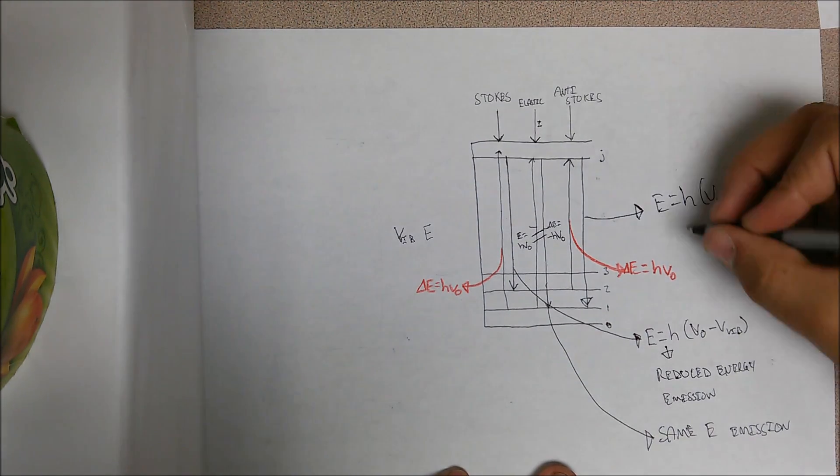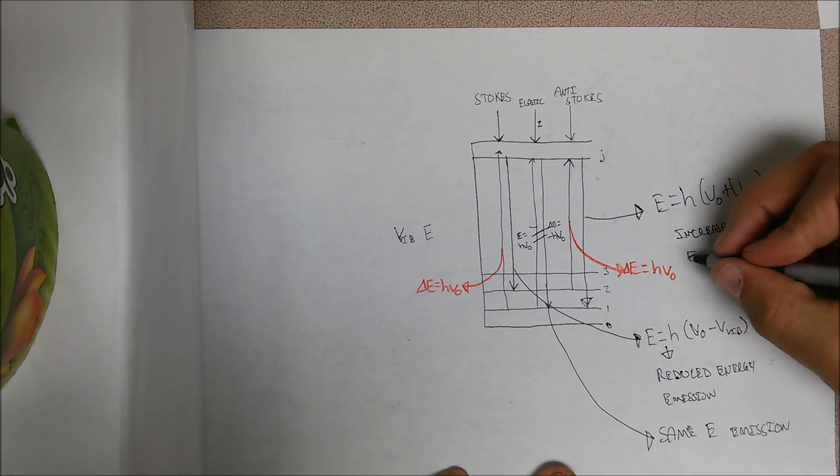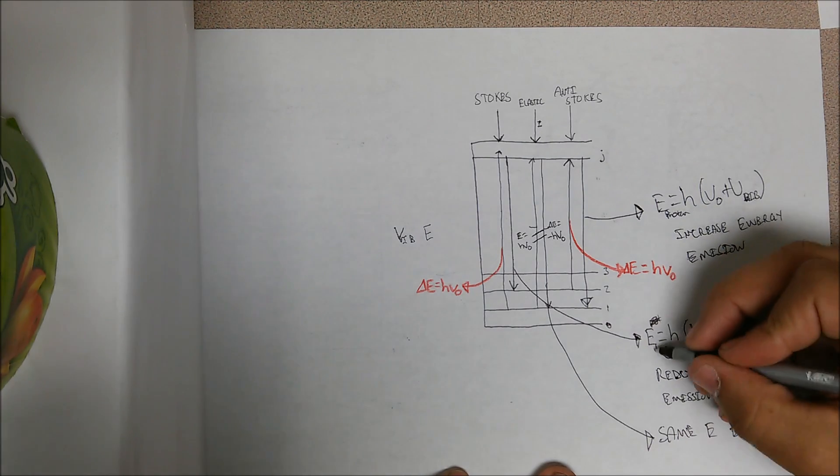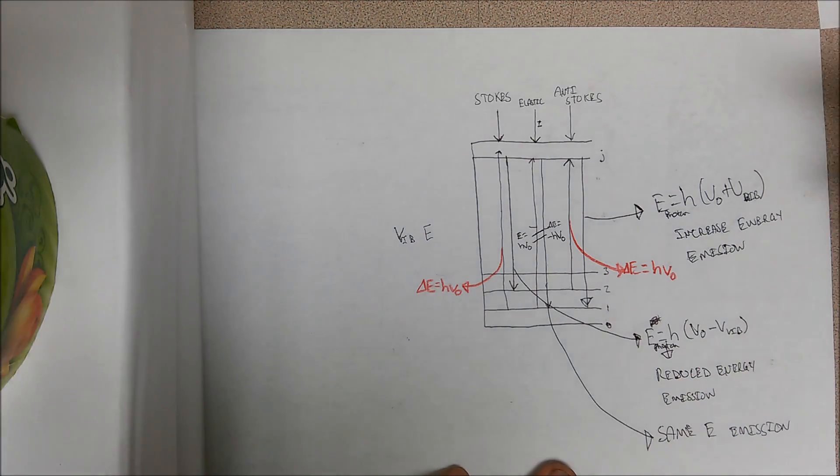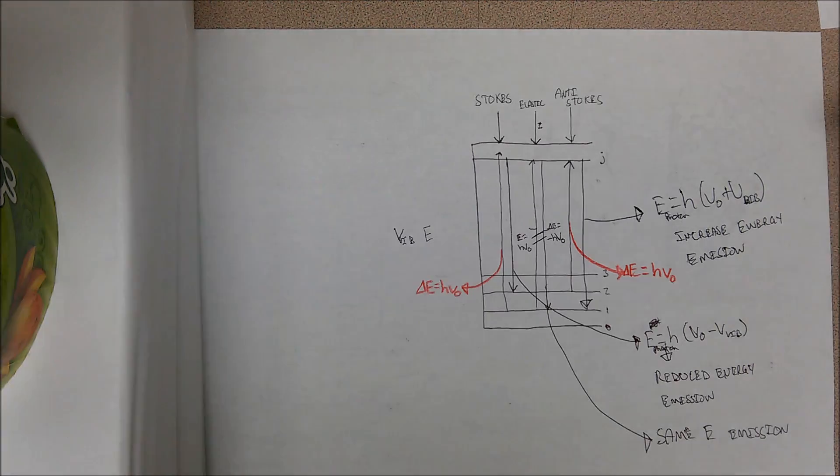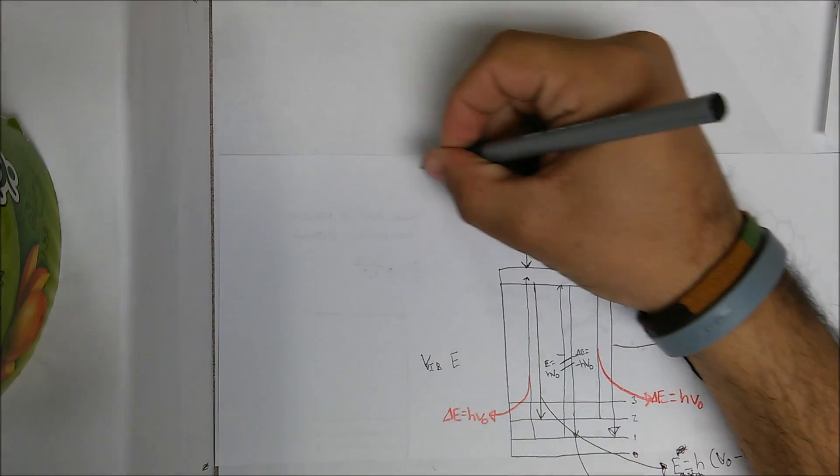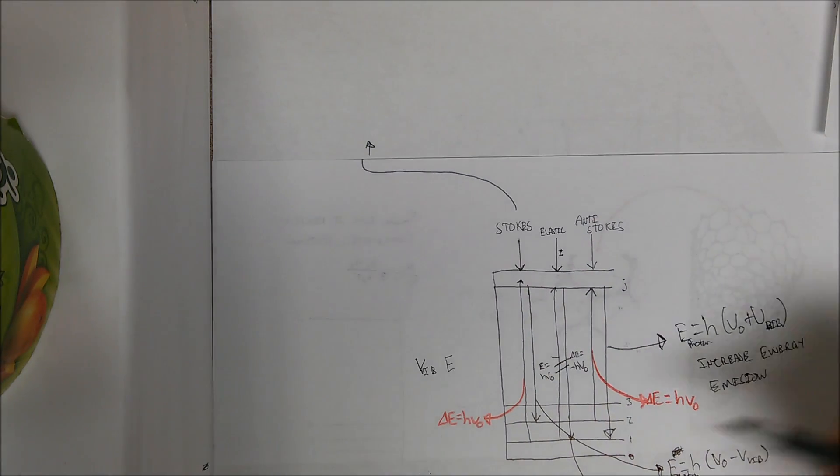We may also model elastic collisions with no net exchange in energy, resulting in scattered photons with the same incident frequency. Finally, in the last case, anti-Stokes scattering can occur where the scattered photon now has an energy of V0 plus V vibrational times Planck's constant.